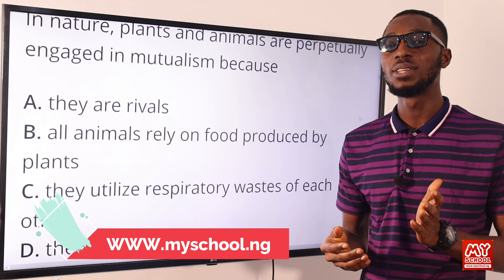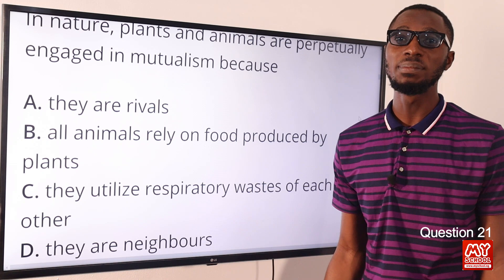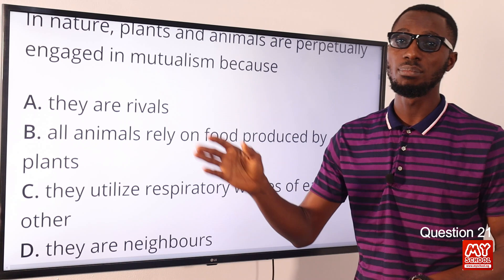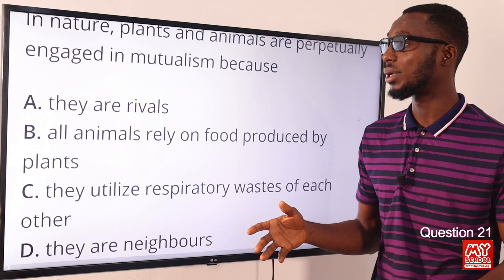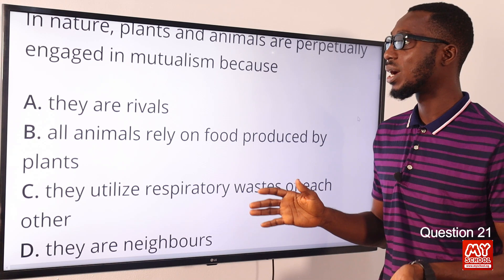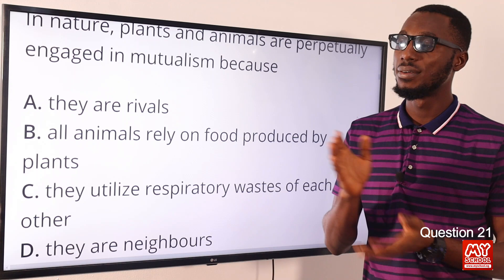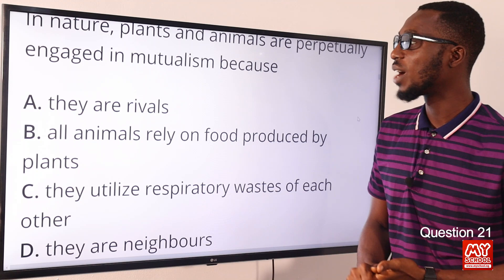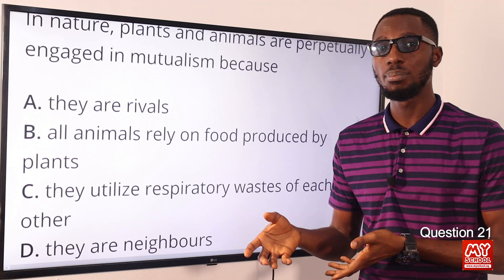Question 21: In nature, plants and animals are perpetually engaged in mutualism because of what? Symbiosis refers to a close and prolonged relationship between two unrelated organisms. We have different forms: parasitism, where one benefits and harms the other; commensalism, where one benefits but does not harm the other, like the remora and shark; and mutualism, where the association is beneficial to both organisms, like lichen - fungi providing shelter, algae providing food.